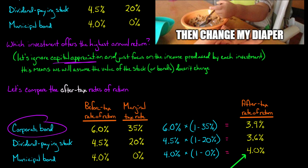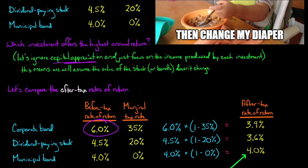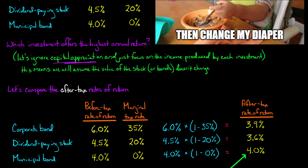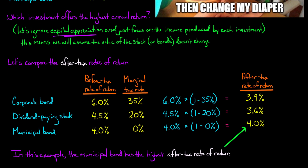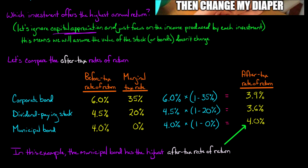For the corporate bond: six percent times one minus 35 percent gives an after-tax rate of return of 3.9 percent. For the dividend-paying stock: four and a half percent times one minus 20 percent equals 3.6 percent. For the municipal bond, the before-tax and after-tax rates of return are identical because there is no tax on municipal bond interest. So four percent times one minus zero percent equals four percent — it's tax-exempt income.